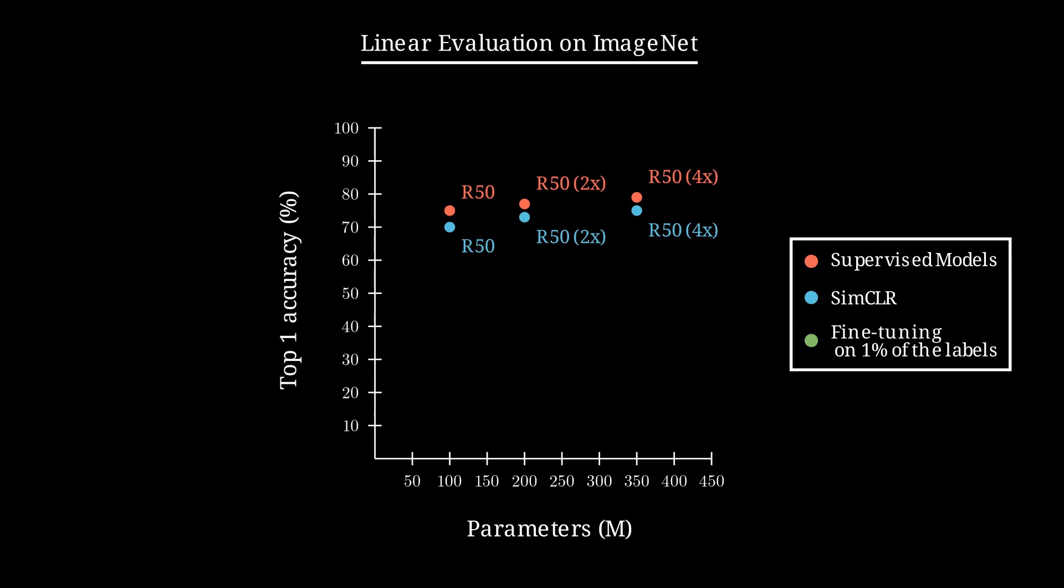Even more impressive, when fine-tuned on just 1% of ImageNet labels, SimCLR reaches an 86% top 5 accuracy, outperforming fully supervised models like AlexNet, which relies on 100 times more labeled data.